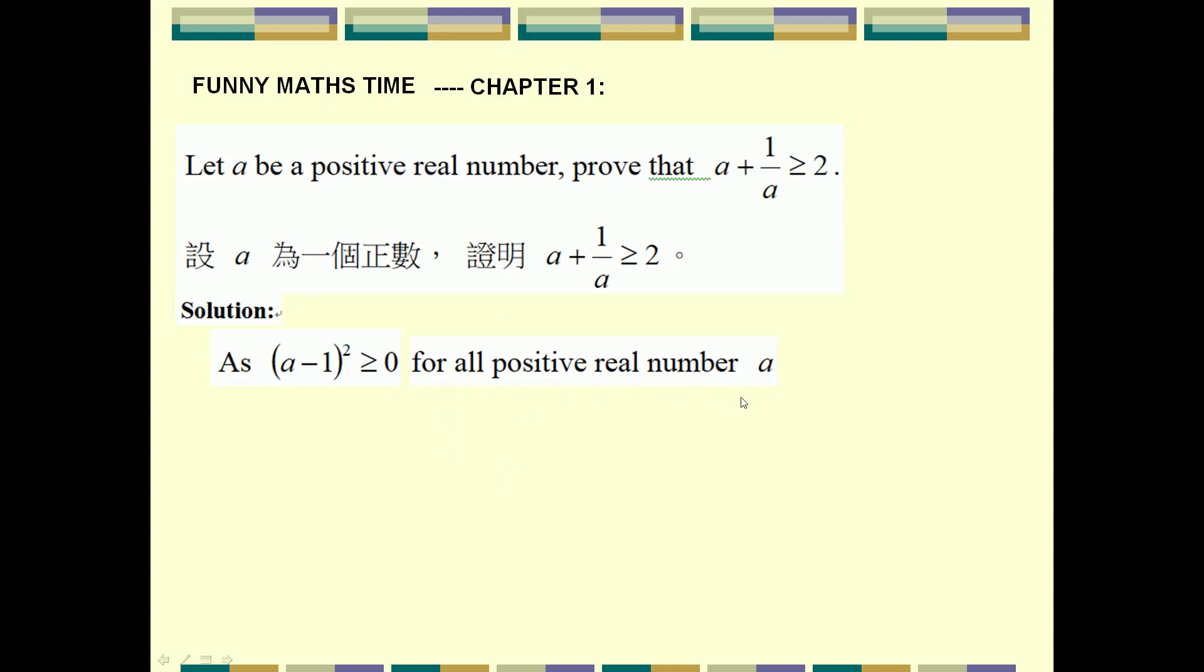Expand (a - 1)² will become a² - 2a + 1, and this is greater or equal to zero. This also must be true for a² - 2a + 1. We move -2a to right hand side.